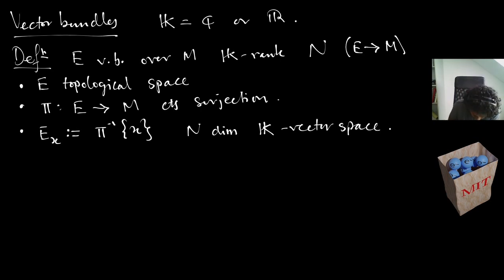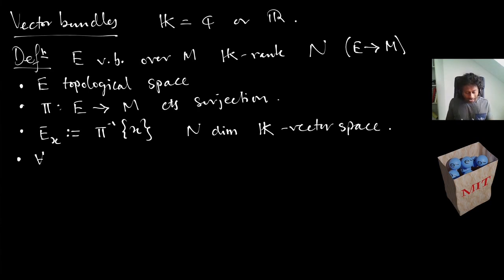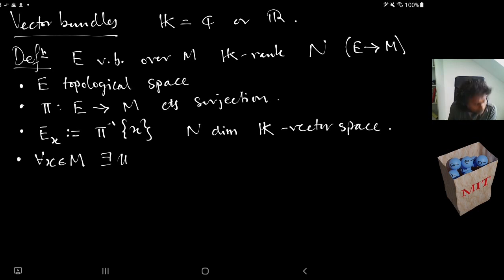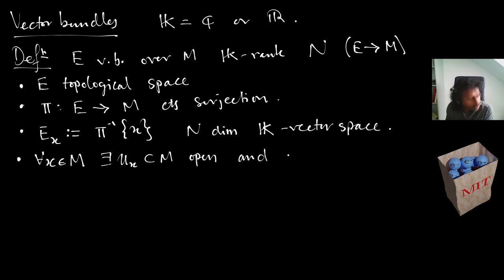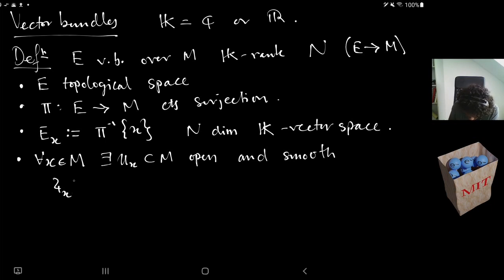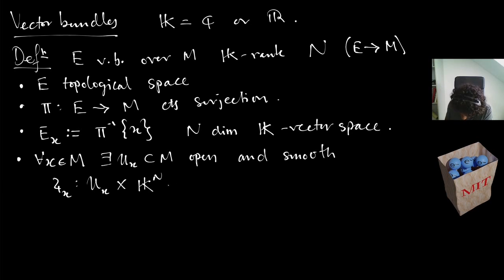The next condition is some sort of chart condition. A vector bundle, from an analytical point of view, is really like a system in the presence of geometry. We need some way of trivializing them: for each x in M we ask that there is an open set U_x and smooth maps ψ_x from U_x × K^N into the inverse fiber over U_x.